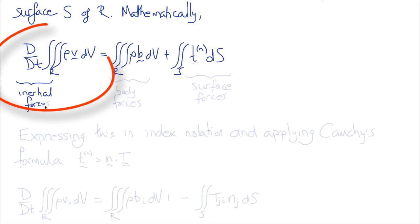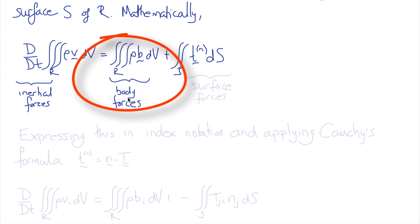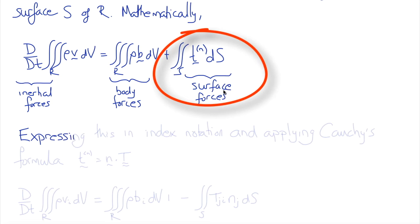The first term are the inertial forces, the rate of change of mass times velocity. The second term are the body forces, the integral of the body forces per unit mass times mass per unit volume over volume. The third term are the surface traction or surface forces, the integral of all the surface tractions over S.